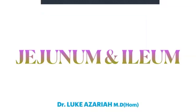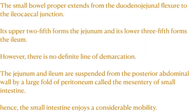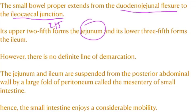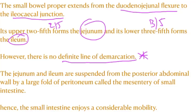Hello, welcome to another session. As a continuation of the duodenum, we'll discuss the jejunum and ileum today. The small bowel proper extends from the duodeno-jejunal flexure to the ileocecal junction. The upper two-fifths forms the jejunum and lower three-fifths forms the ileum. There is no definite line of demarcation between them. The jejunum and ileum are suspended from the abdominal wall by a large fold of peritoneum called the mesentery of the small intestine.